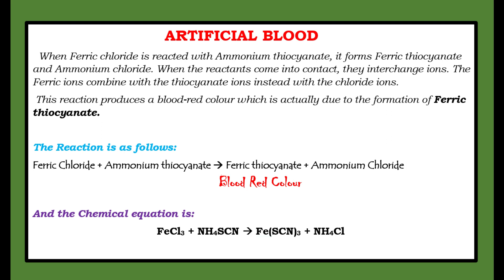The reaction is as follows: ferric chloride plus ammonium thiocyanate gives ferric thiocyanate, which is blood red color, and ammonium chloride. The chemical equation is: FeCl3 + NH4SCN → Fe(SCN)3 + NH4Cl.